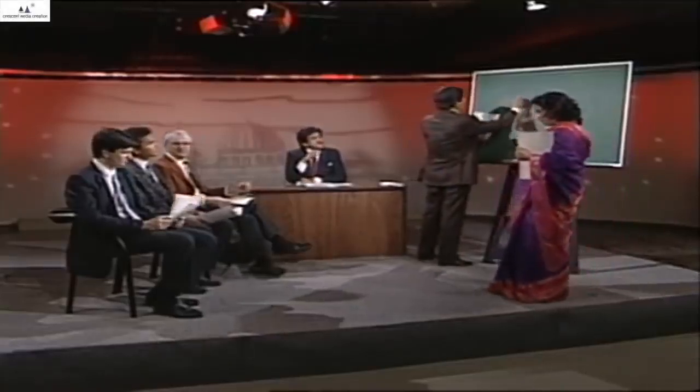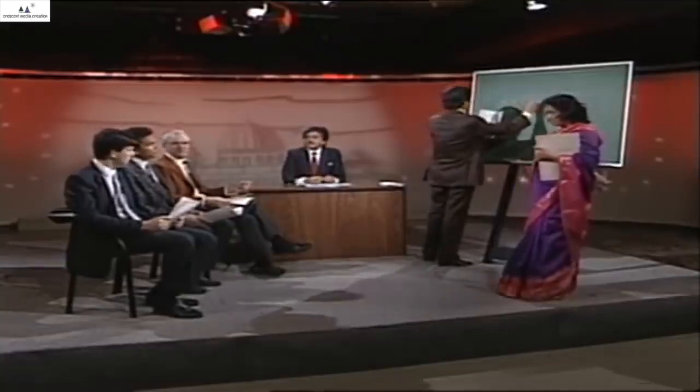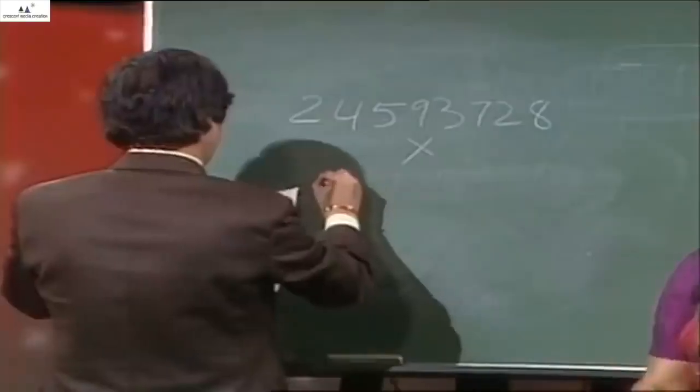Could you just tell me how many digits it is so that I can sort of program my mind? How many digits by how many digits? They're both eight digits. Eight digit numbers? Yes. Okay fine. I'll look at it once it is written down.